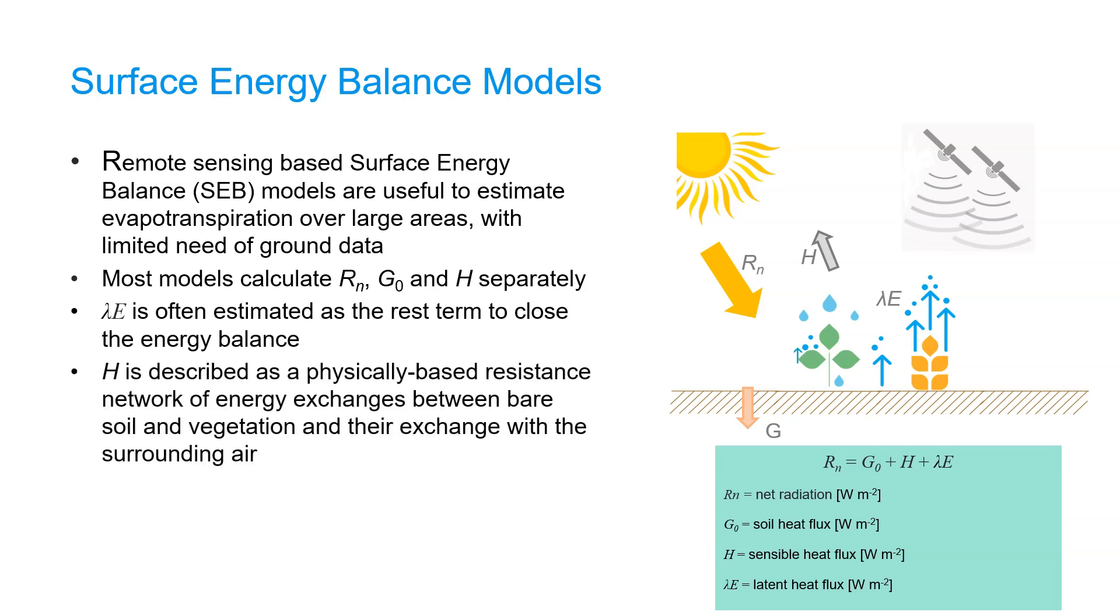In these models the sensible heat flux is often described as a physically based resistance network of energy exchanges between bare soil and vegetation and their exchange with the surrounding air. However different models derive fluxes in a different way. In the next slides we will focus on the difference between single and dual source models.